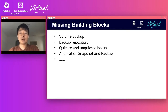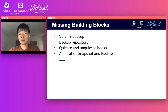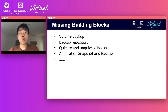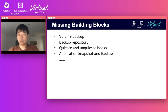We are still missing volume backup functionalities in the Kubernetes environment. We are also missing backup repositories — storing backups on a different storage media than your primary storage, so that in cases like disaster recovery where you don't have your data center or cluster, you still have a backup stored somewhere, maybe in the cloud or another data center, that can restore your original data into a different place. We are also missing quiesce and unquiesce hooks and application-level snapshot and backup.